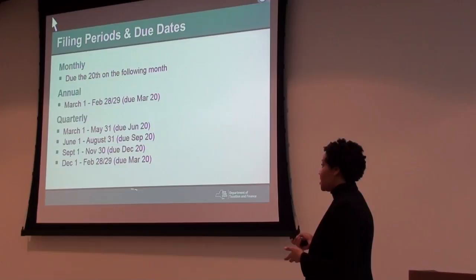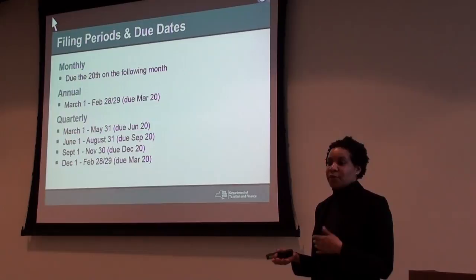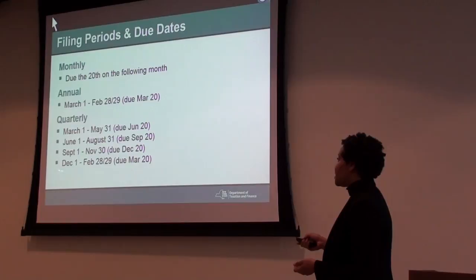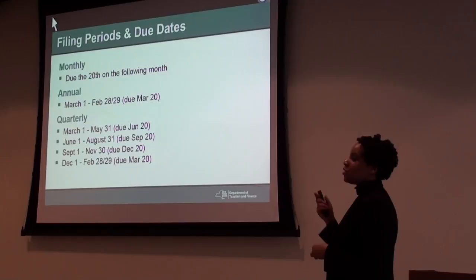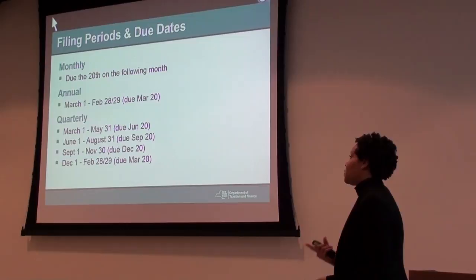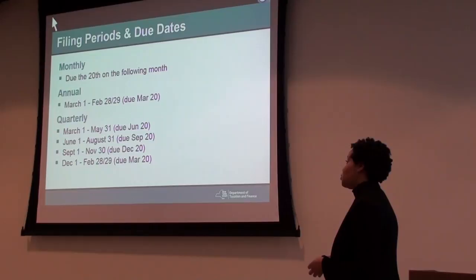The returns are always going to be due 20 days after the period ends. So we're in February — the last quarter is December, January, and February, so that return is due March 20th. Then March, April, May is due June 20th. June, July, August is due September 20th. And September, October, November is due December 20th.